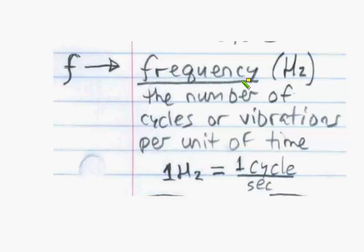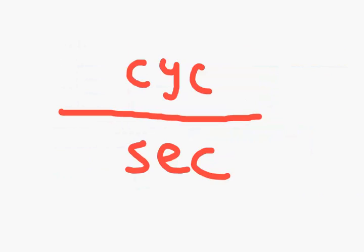Now, frequency is measured in hertz and it's defined by the number of cycles that the object makes per second. This is best done by an example — so we have cycles per second, we fill in the number of cycles and the number of seconds, and when I divide that, it gives me the frequency.